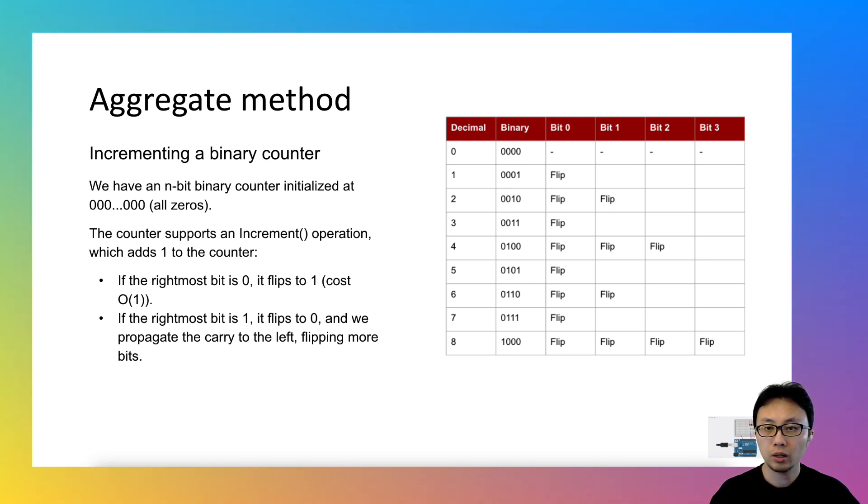If we have a 4 bit binary counter and 8 operations, what's the total cost? When we discussed this example, we mentioned that the cost varies across different operations, but we didn't explore the pattern.